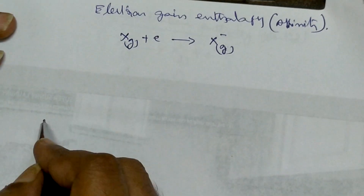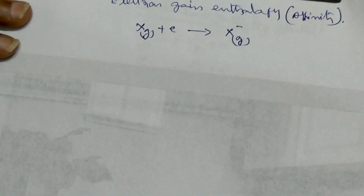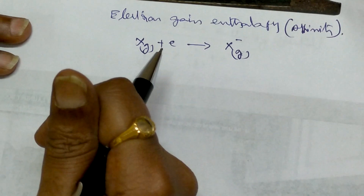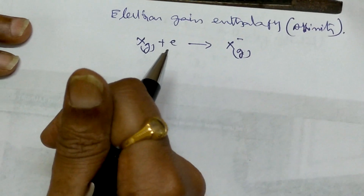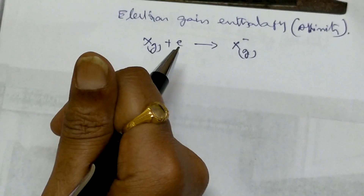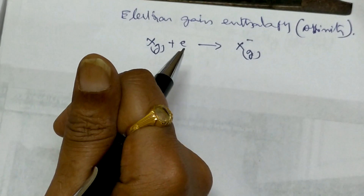If it is in the group, the electron gain affinity will come down — that means the negative value will come down going down the group. Normally it will be represented in kilojoules per mole. So that is about the electron gain enthalpy.